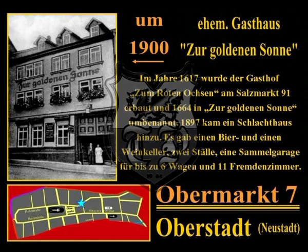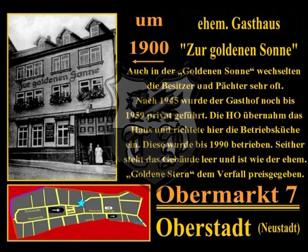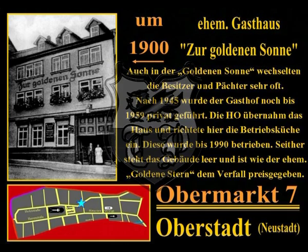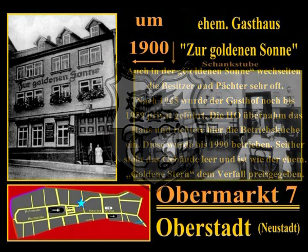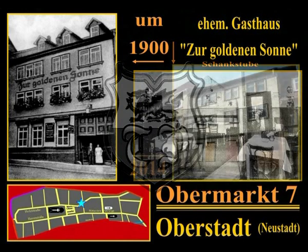Im Jahre 1617 wurde der Gasthof zum Roten Ochsen am Salzmarkt 91 erbaut und 1664 in zur Goldenen Sonne umbenannt. 1897 kam ein Schlachthaus hinzu; es gab ein Bier- und einen Weinkeller, zwei Ställe, eine Sammelgarage für bis zu sechs Wagen und elf Fremdenzimmer. Nach 1945 wurde der Gasthof noch bis 1959 privat geführt; danach übernahm die HO das Haus und richtete hier die Betriebsküche ein, die bis 1990 betrieben wurde. Seither steht das Gebäude leer und ist wie der ehemalige Goldene Stern dem Verfall preisgegeben.